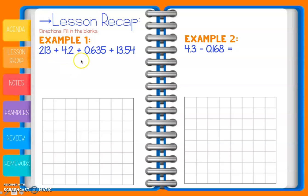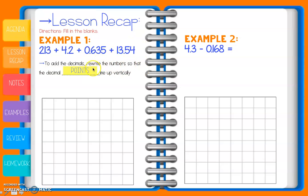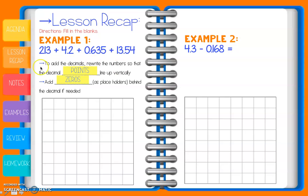We're going to start with example one, and it's an adding problem. A couple of things: to add the decimals, rewrite the numbers so that the decimal points line up. Then we're going to add zeros as placeholders behind the decimal if we need to.